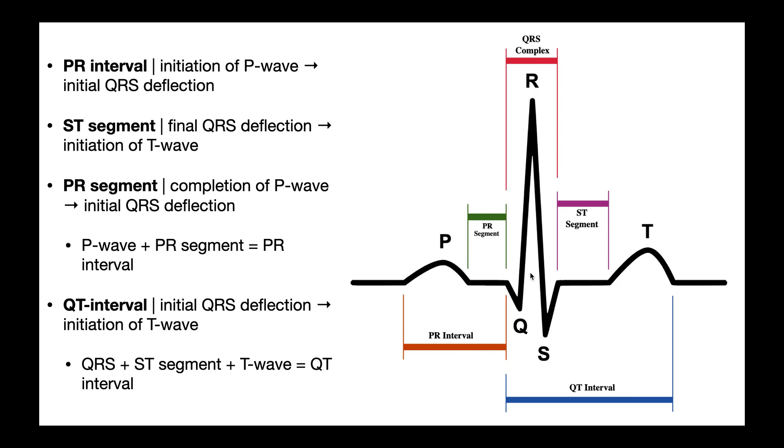Now atrial repolarization is here, it's just masked by the large QRS complex. So it's approximately right here, and we just can't see it because it's covered up by this very large set of deflections, the QRS complex.